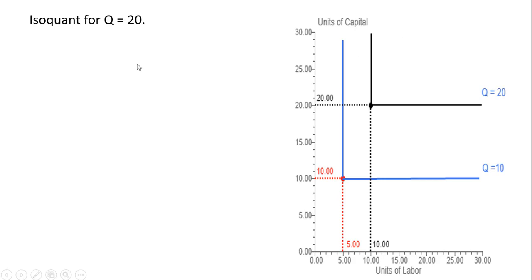All right, so what I'm doing now is using that same production function, let's find a higher isoquant where Q equals 20. This is what it's going to look like graphically, this black isoquant. So using our production function, setting our output now equal to 20, we're going to set 2L equal to 20, solving for L, and then set K equal to 20. And that would be our ideal point on the isoquant for producing 20 units of output.